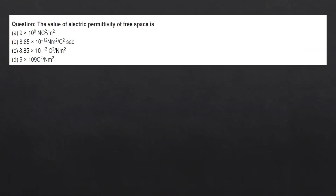What is the value of permittivity of free space, epsilon-zero? The formula involves 1 upon 4π epsilon-zero. After eliminating incorrect options, the key is the unit — it is coulomb-squared upon newton-meter-squared. So option C is correct.